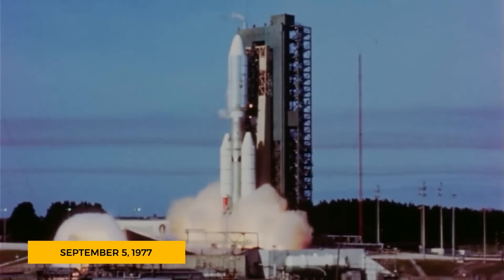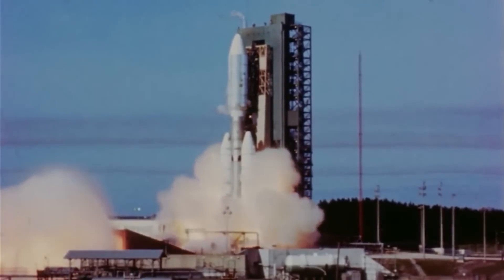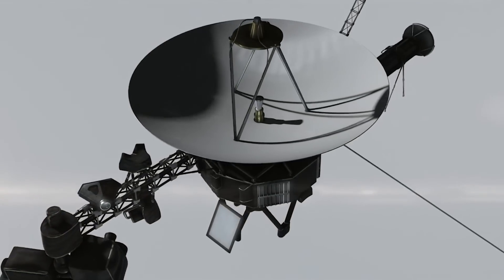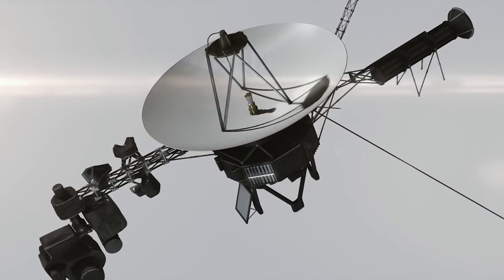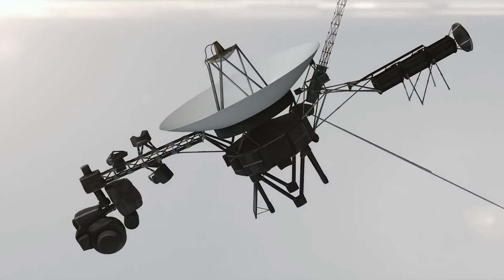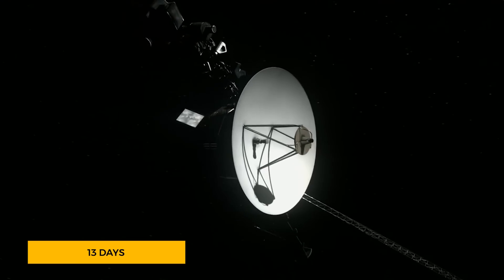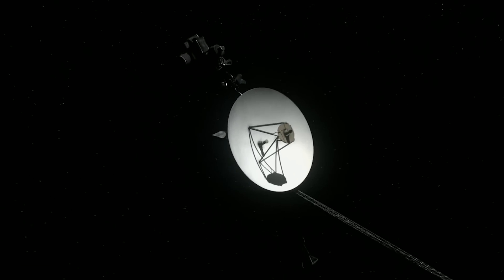On September 5th, 1977, Voyager 1 was launched from Cape Canaveral, Florida, aboard a Titan-3E Centaur rocket, marking the start of a journey that would push the limits of human exploration. Just 13 days earlier, Voyager 2 had begun its own parallel voyage into the cosmos.